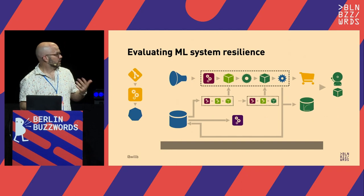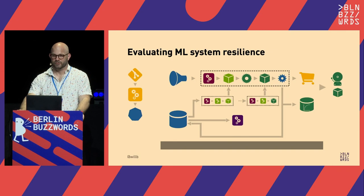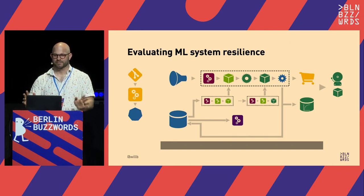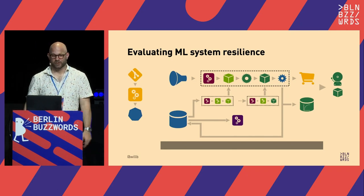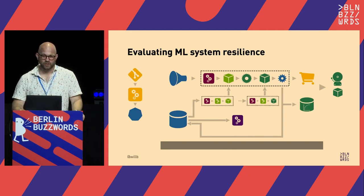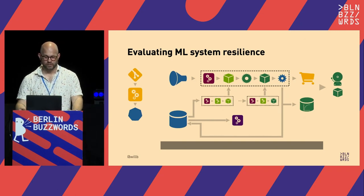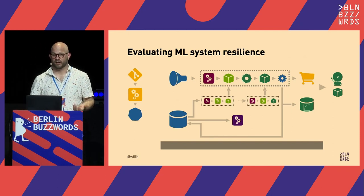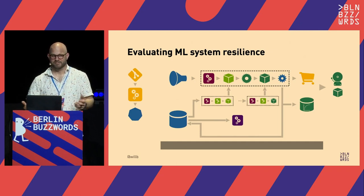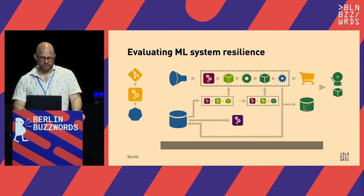Machine learning systems in general are complicated and can fail in many ways — some are ordinary distributed system failures and some are specific to machine learning. We want to test how our system behaves with a range of inputs, with unexpected inputs, and see if we can detect failures. If the distribution of things our users are doing changes over time, will we know, or will our model just be making bad predictions?